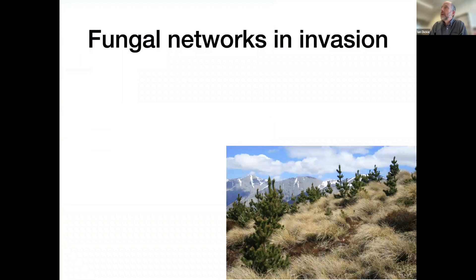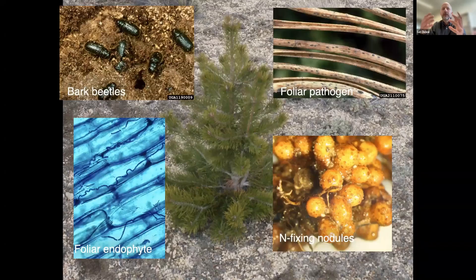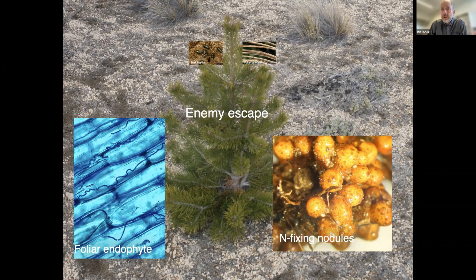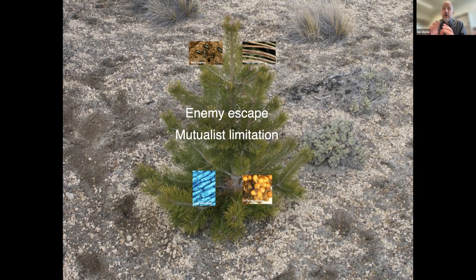Those will be the two topics of today. We'll start with invasions — looking at fungal networks and invasion. When you think about invasions, there's a concept that plants occur in their natural environment with lots of herbivores, pathogens, endophytes, and mutualists. But when we take that plant and move it to a new place — say, a North American pine tree moved to New Zealand or Australia — we might expect it leaves many of those enemies behind. That concept has been called enemy escape. At the same time, we might expect that mutualists could be left behind; I've referred to that as mutualist limitation.